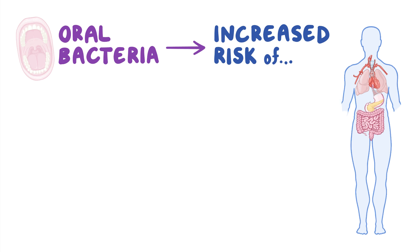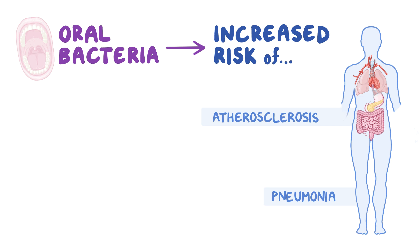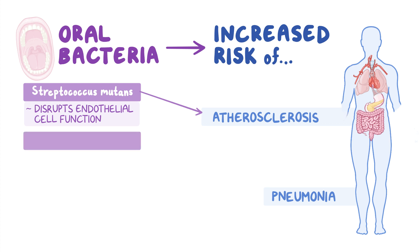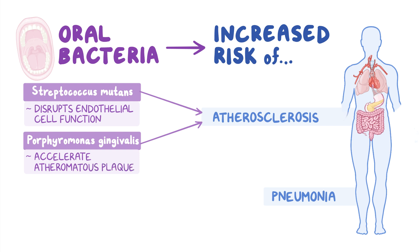Oral bacteria can also contribute to inflammatory diseases such as atherosclerosis or pneumonia. In atherosclerosis, oral bacteria such as Streptococcus mutans could contribute directly by disrupting endothelial cell function, while periodontal bacteria such as P. gingivalis could accelerate the development of atheromatous plaque by infecting the epithelial cells that produce pro-inflammatory cytokines, which enter the blood circulation and affect the cells in the atheromatous plaques, thus leading to the development of atherosclerosis.